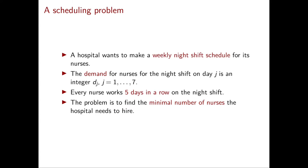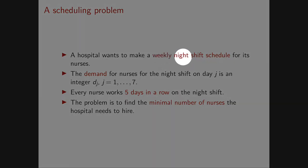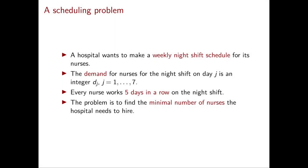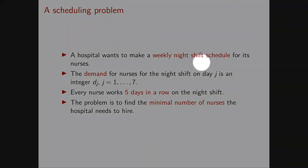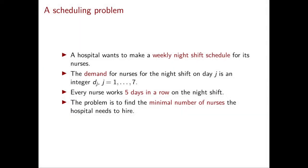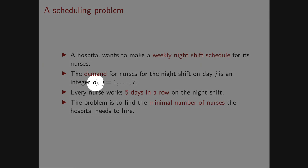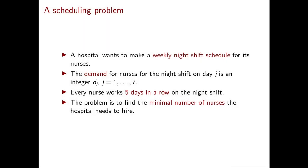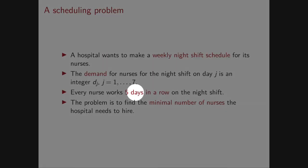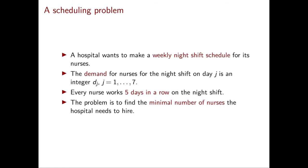The next example of a linear programming problem is a scheduling problem. We have a hospital that needs to make a weekly night shift schedule for its nurses. We know for every night of the week the demand for nurses, encoded in d_j for j going from 1 to 7. An important constraint is that every nurse needs to work for exactly five consecutive days on the night shift. The question is to find the minimal number of nurses the hospital needs to hire.